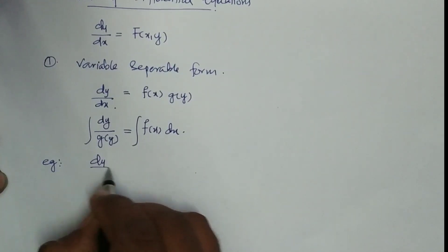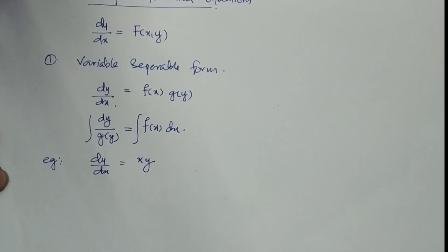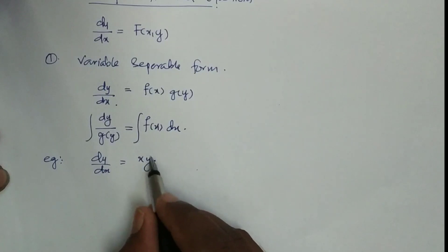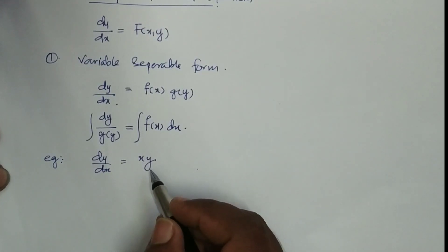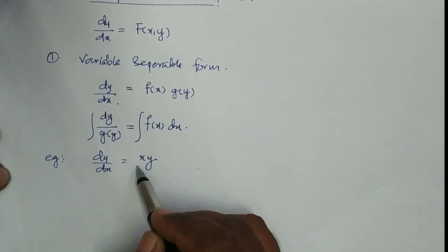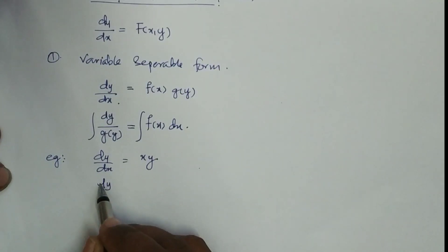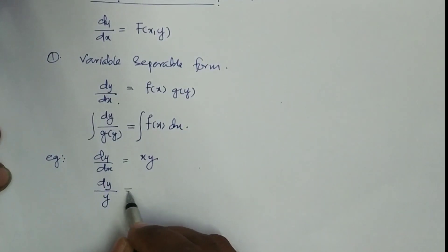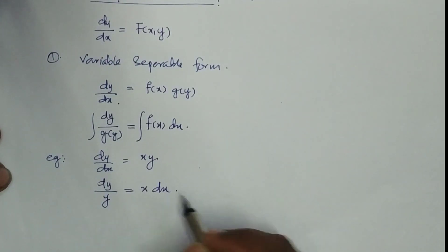Example: dy/dx = x·y. We are given a function to solve — a differential equation. Here we have two functions, x and y, in product form. We need to separate them: the x function with dx and the y function with dy. So we get dy/y on one side and x·dx on the other.